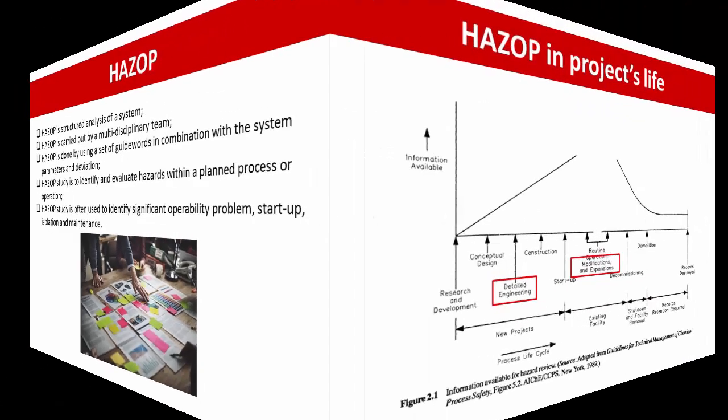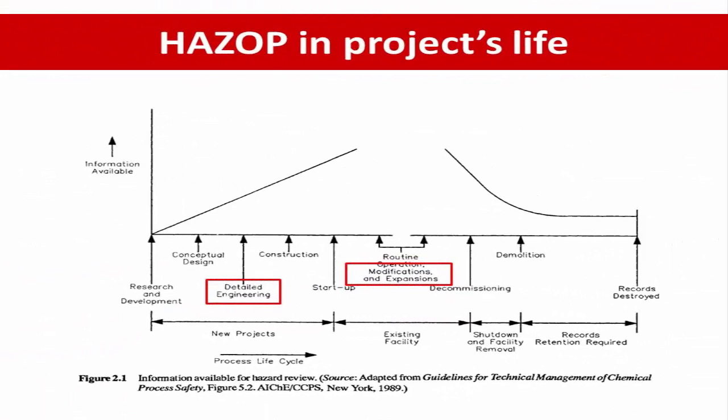HACCP in the Project Life Cycle: The main use of HACCP study in the process industry is for new design, process, and operation — both continuous and batch process — and for modification of the existing plant and process. HACCP study is always mandatory during the detailed engineering stage for a new plant, modification, or expansion of the existing plant or process, as per the picture shown.